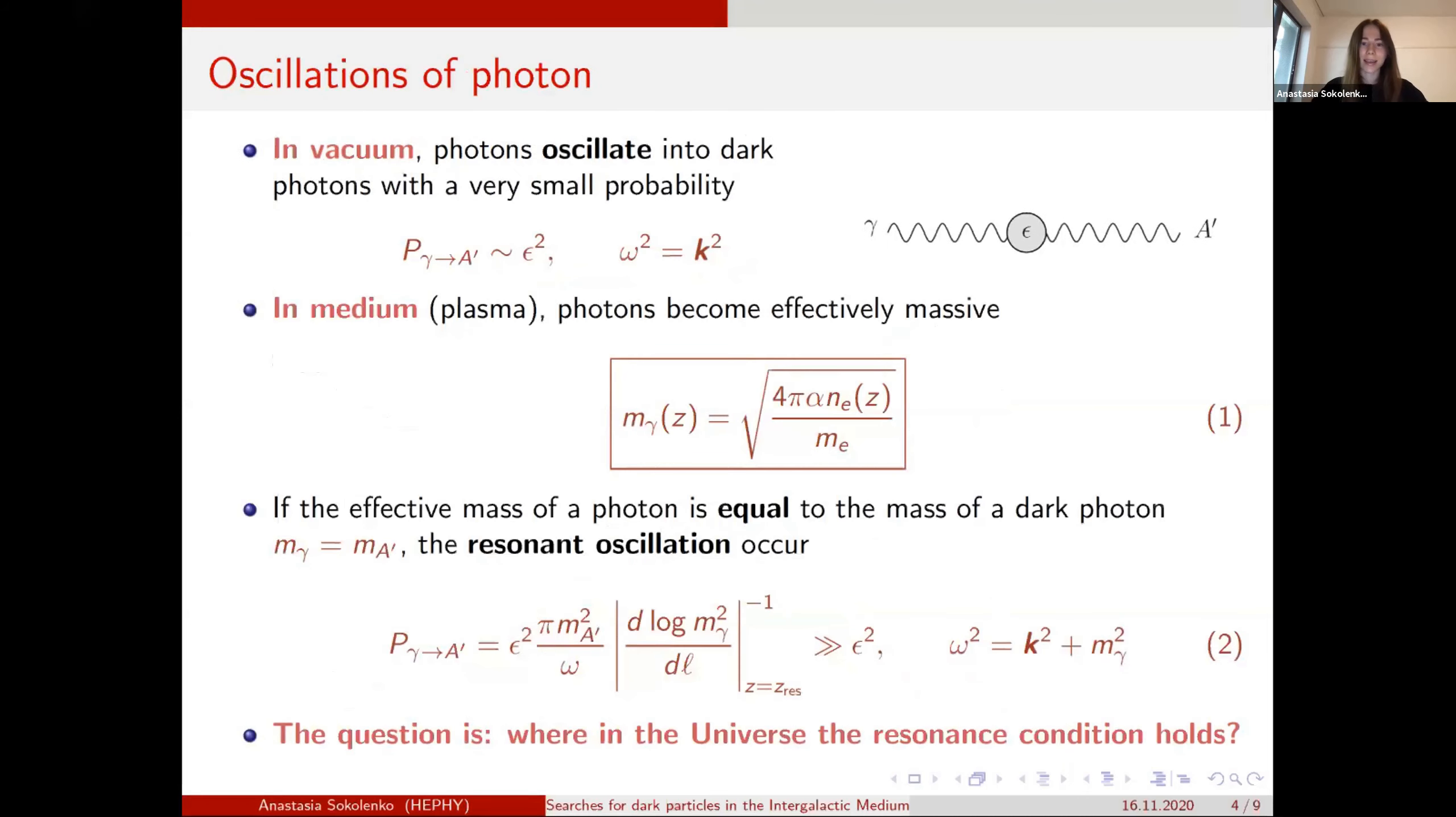And just I will briefly discuss some theory. So dark photon could oscillate into ordinary photons and vice versa. And in vacuum, it's proportional to the coupling squared. And it's quite surprising because this coupling is very, very small.